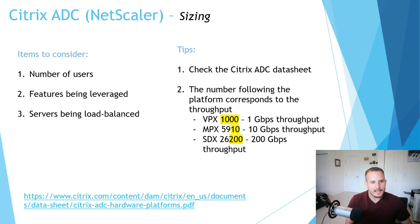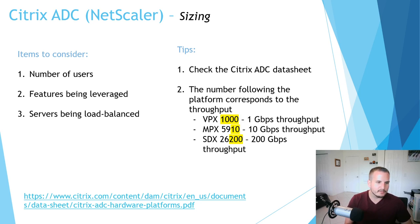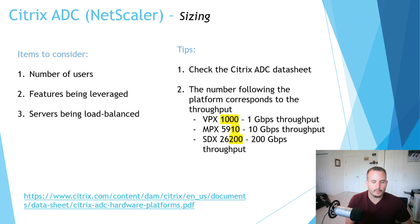The nice thing about Citrix is if you ever get close to reaching that threshold, it's very easy to upgrade the license for additional throughput — especially with the virtual appliance. Let's say you get a VPX 200 and you're getting capped out; just upgrade to a VPX 1000 and re-import the license.